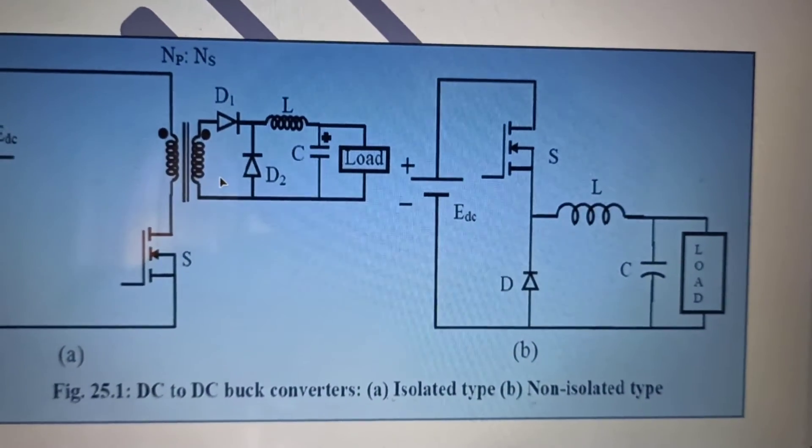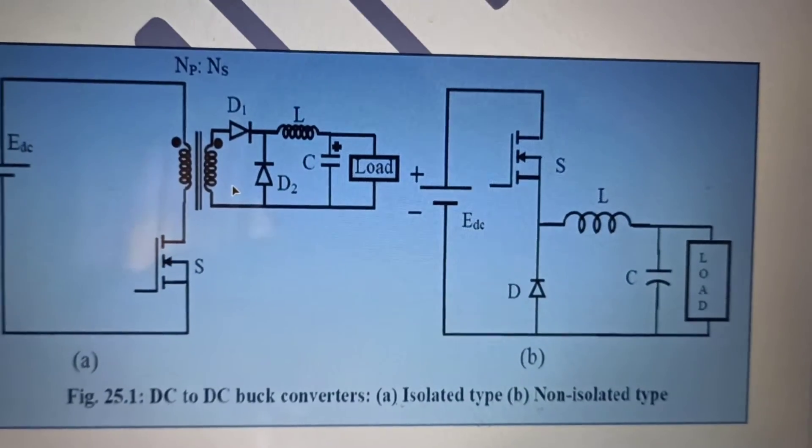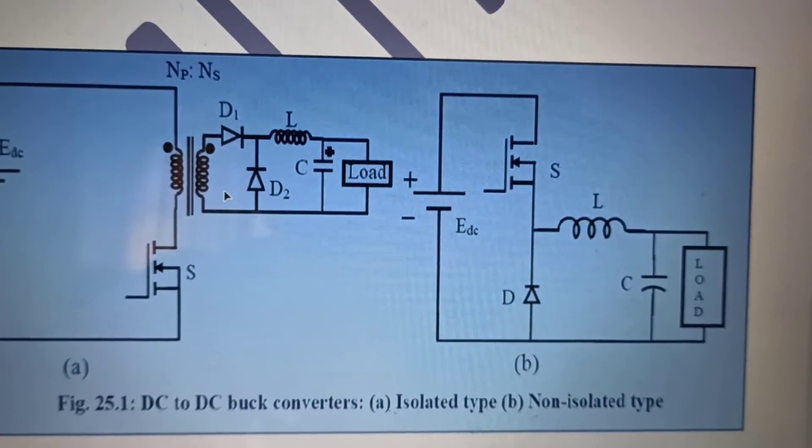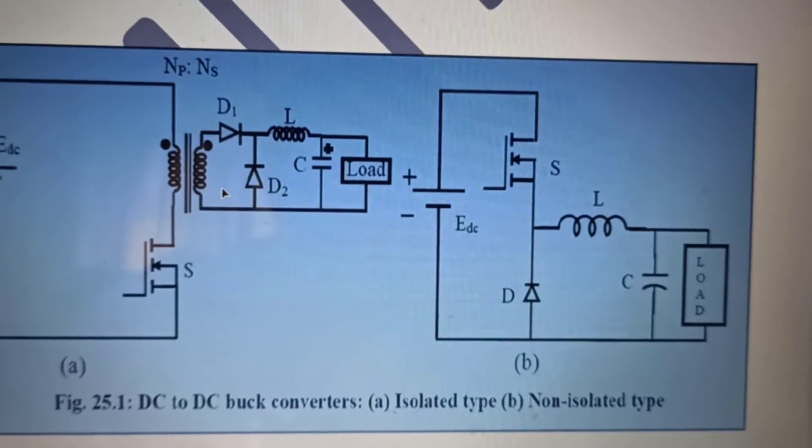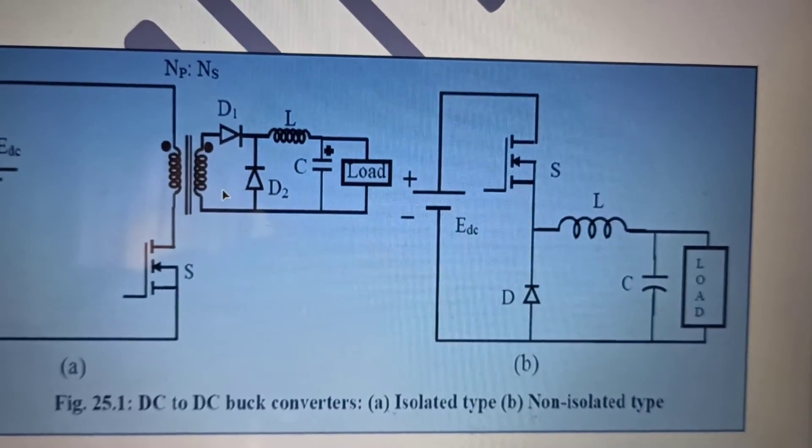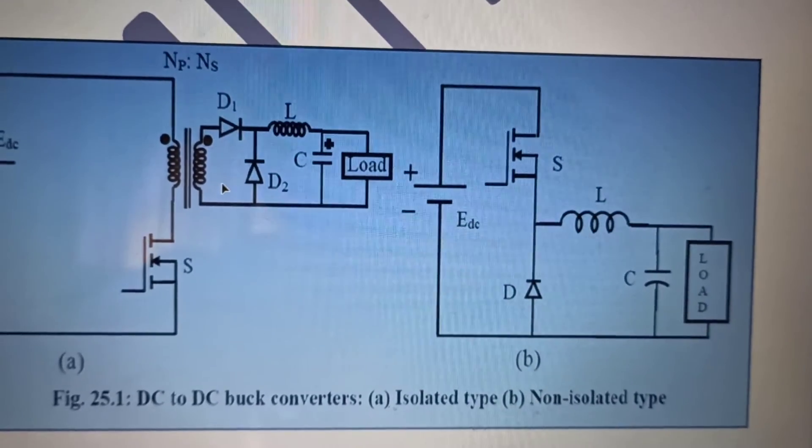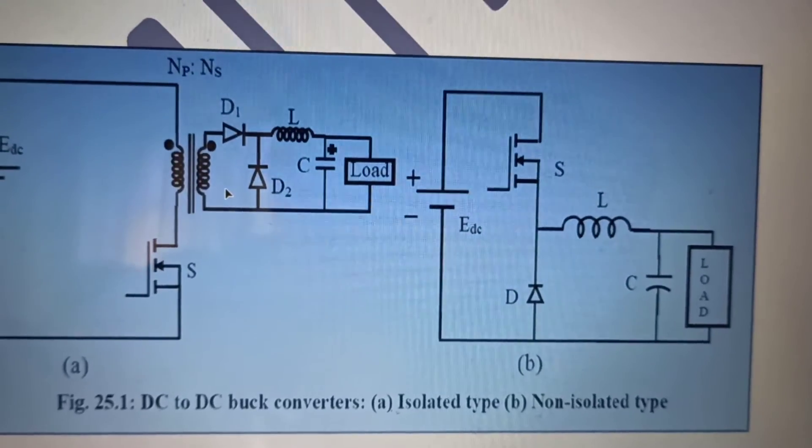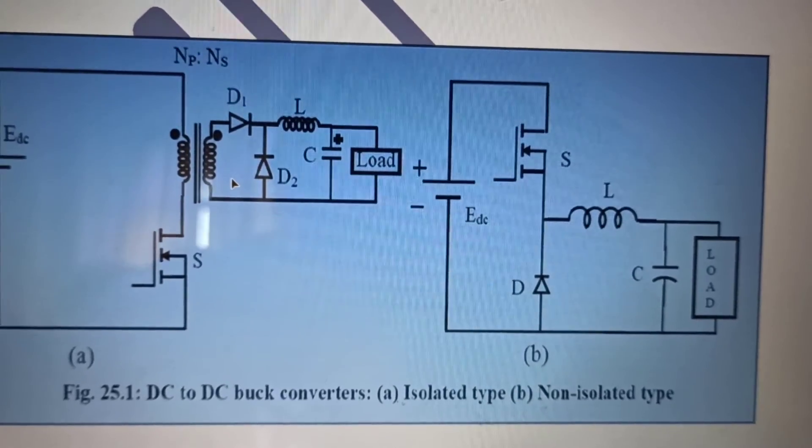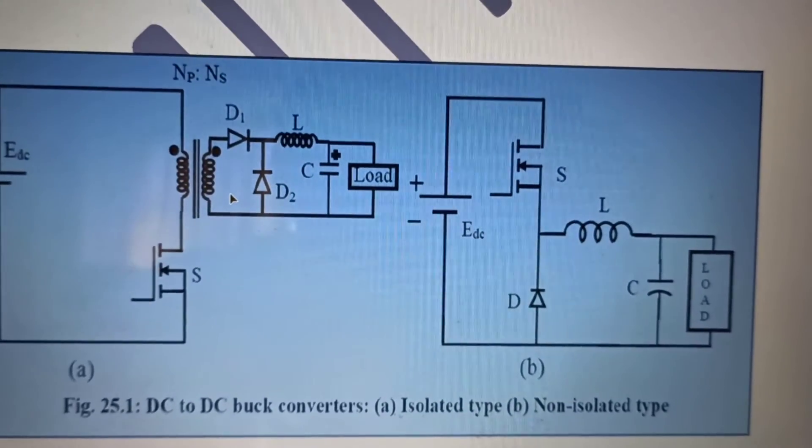Whereas if you are looking at a non isolated type, it is very easy. Very easy to look and understand. It consists of a DC voltage connected via switch, diode inductor. Capacitor is there. The circuit that I was talking about in the previous direction.